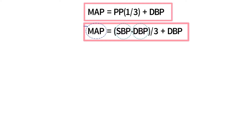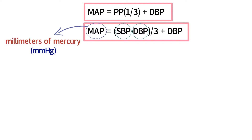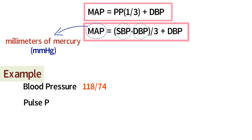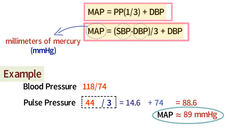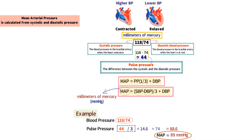Since mean arterial pressure is calculating a pressure, the units used are millimeters of mercury (mmHg). In our example of a blood pressure reading of 118 over 74, we can calculate a pulse pressure of 44, which divided by 3 is 14.6, and added to 74 gives 88.6, or 89 mmHg. Both formulas result in a mean arterial pressure of 89 mmHg. While formulas for mean arterial pressure may appear in various formats, they calculate the same result. Additionally, while units are often left off in clinical readings, mmHg are used for mean arterial pressure — so a blood pressure of 118 over 74 gives a mean arterial pressure of 89 mmHg.